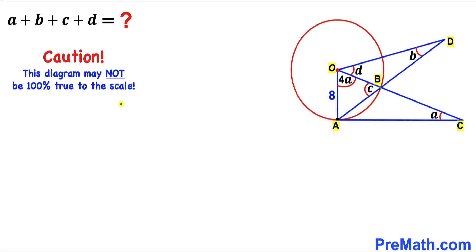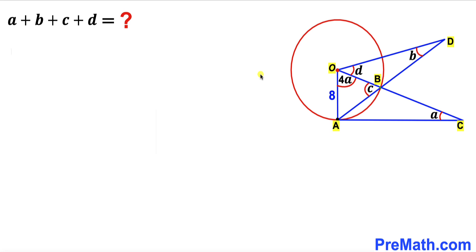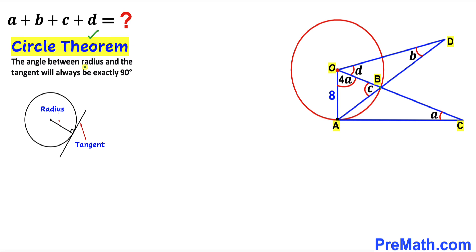Please keep in mind that this figure may not be 100% true to scale. Let's get started. We can see that point A is the point of tangency. Recalling the circle theorem, the angle between the radius and the tangent line is always 90 degrees. Therefore angle OAC is 90 degrees, since OA is the radius and AC is the tangent line.